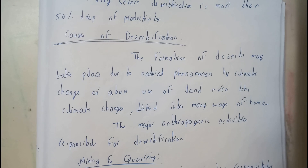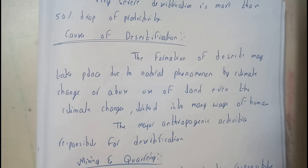As desertification increases, it slowly leads to the formation of deserts. This may take place due to natural phenomena like climatic changes, or from the abundant use of land. It may also be caused by increases in temperature or other reasons that decrease the productivity rate. Desertification is majorly caused by anthropogenic activities like mining and quarrying.